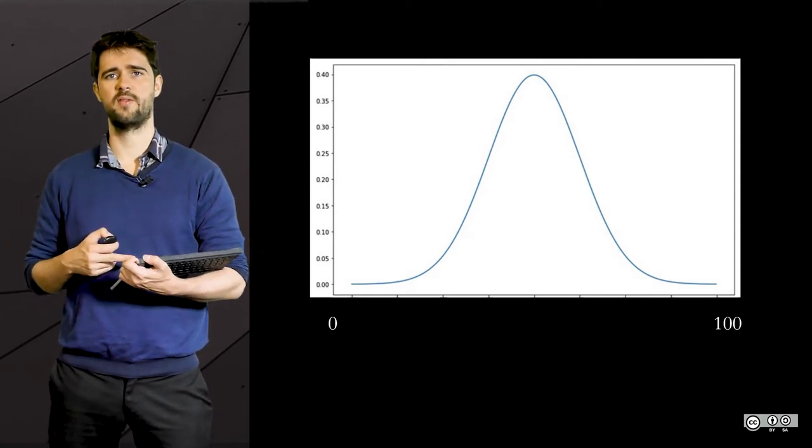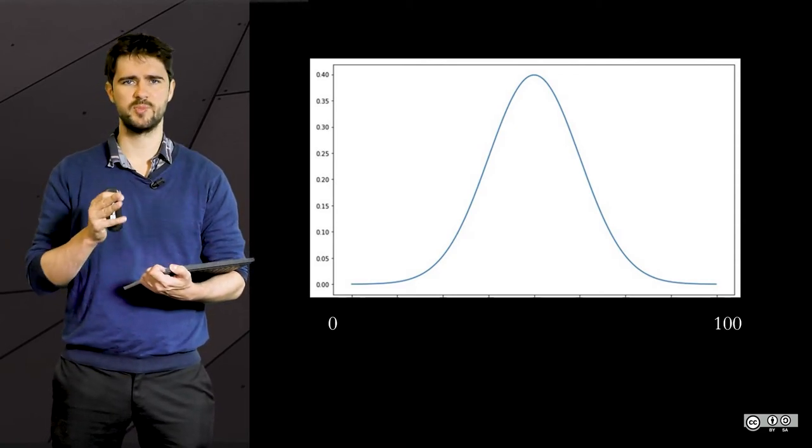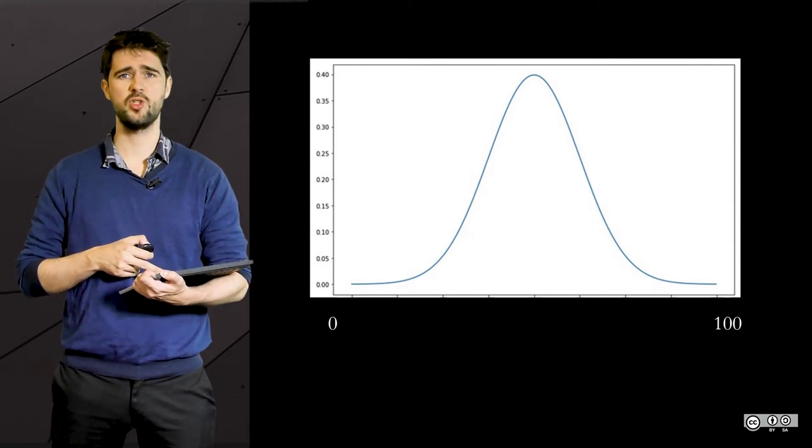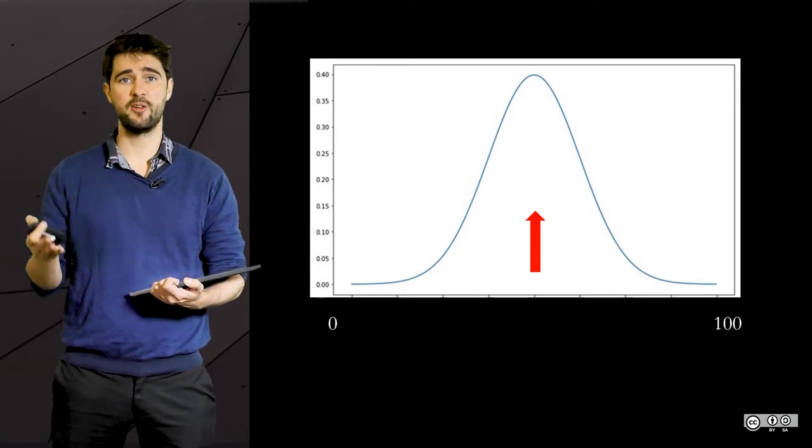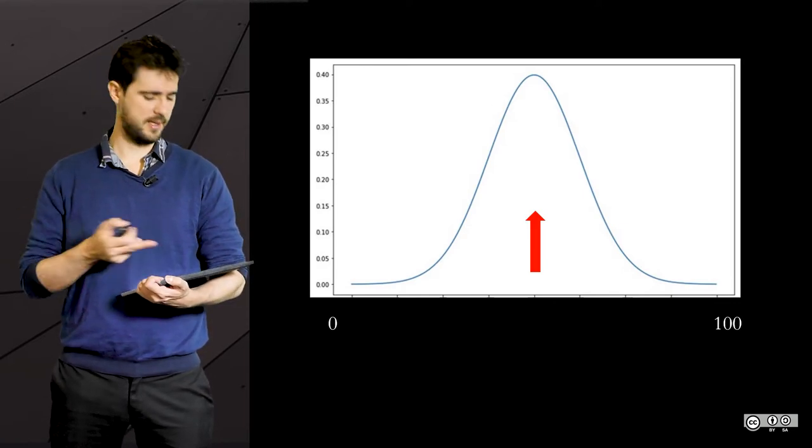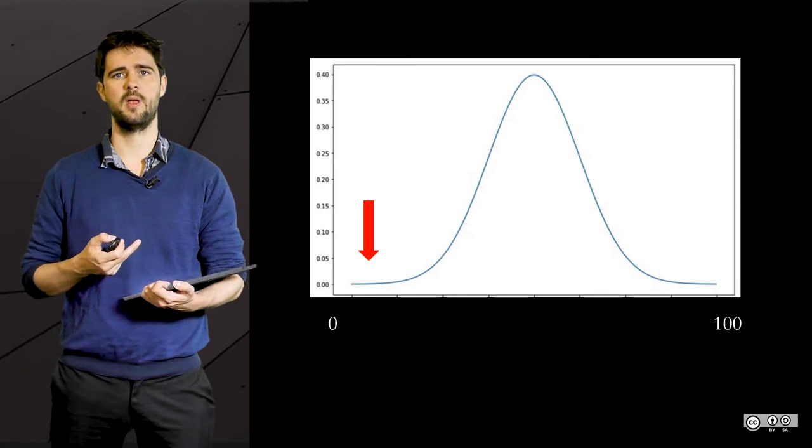it looks like this curve, with the top-performing institutions here, the average ones where most universities are situated here, and the least-performing ones here.